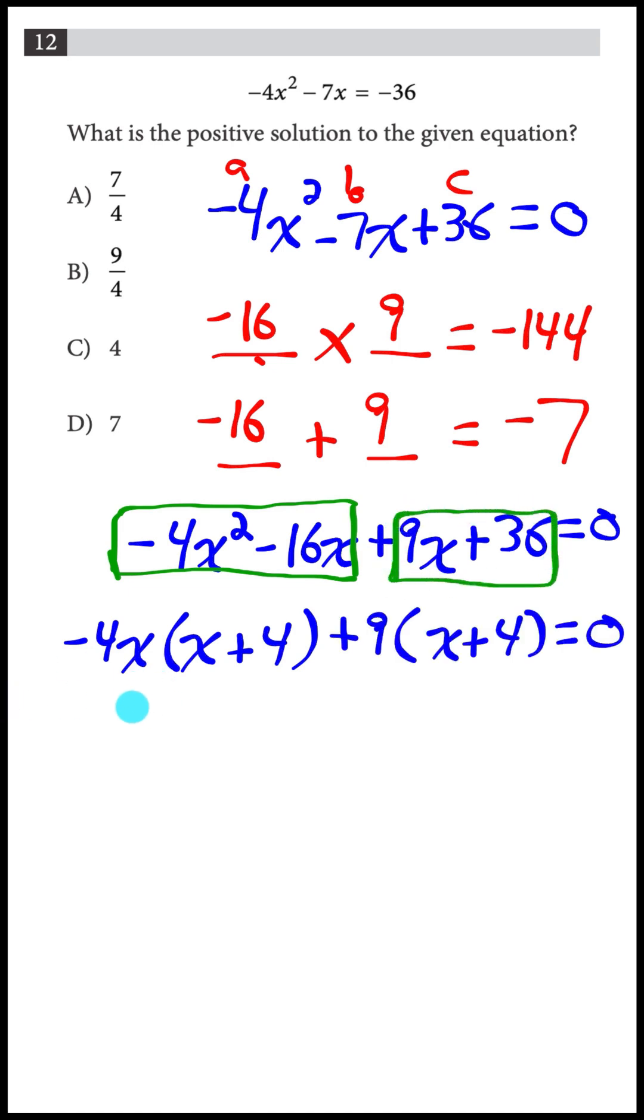Notice I have a common binomial of x plus 4. I could take out that x plus 4. And what I'm left with is negative 4x plus 9 as my second factor.